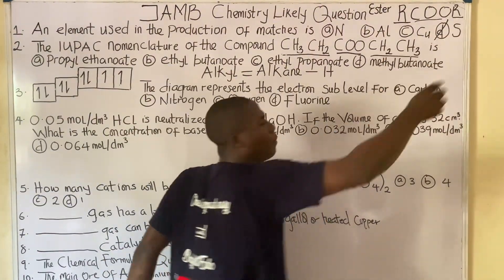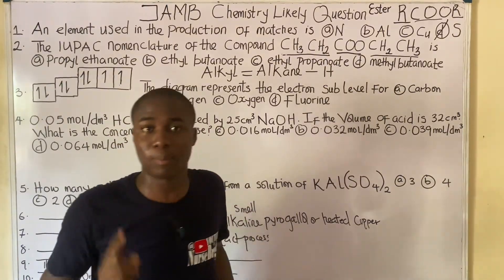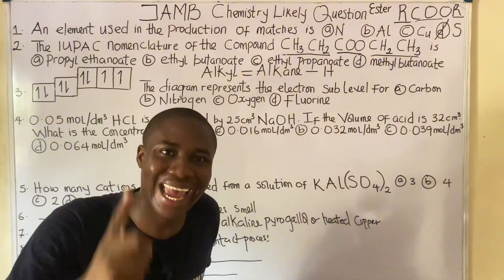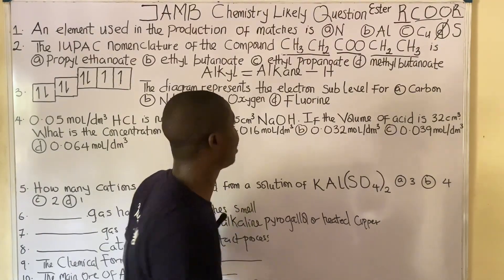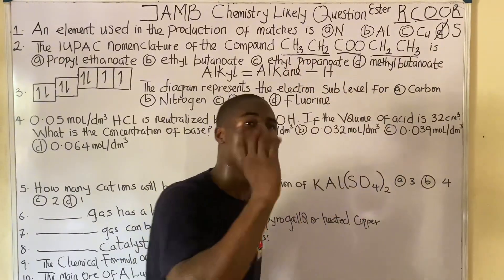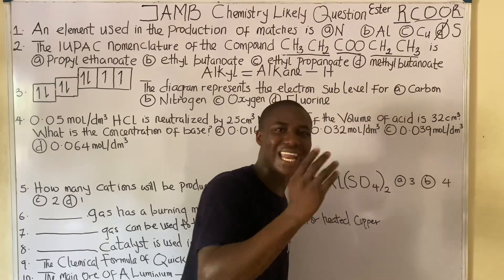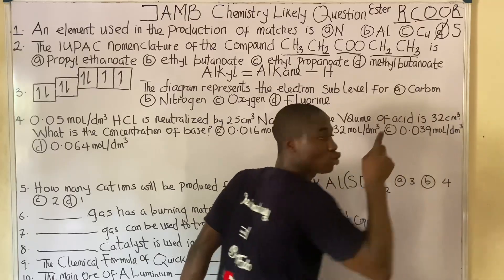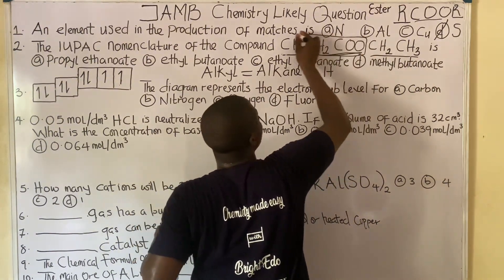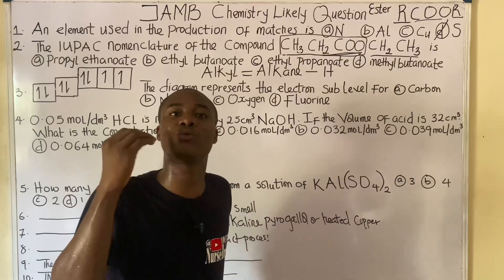The same applies to the other group — two carbons, alkyl group, so we call it ethyl. Now, to name an ester, you name the ending part first — the part after the second oxygen. You name that as an alkyl group first, then name every other part together. Since this last part has two carbons, we call it ethyl.